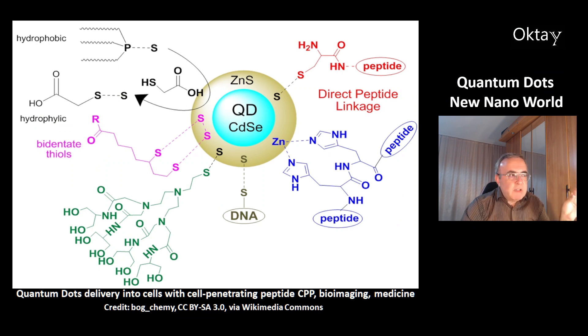This is an example of quantum dots. They are delivered into cells with cell-penetrating peptides called CPP. You can see this quantum dot has two layers, cadmium selenite core and the outer layer zinc sulfite. The sulfite can make sulfur bridges with peptides, DNA, other organic molecules with thiols.